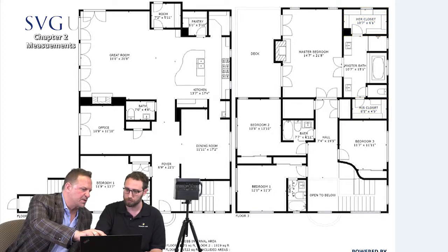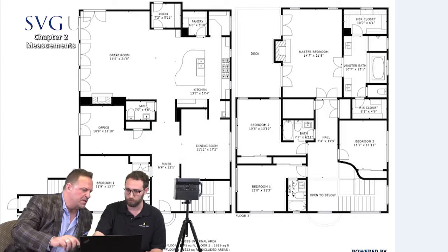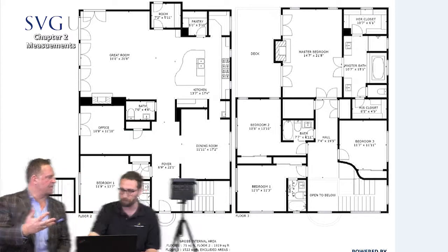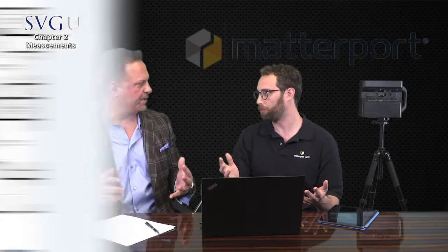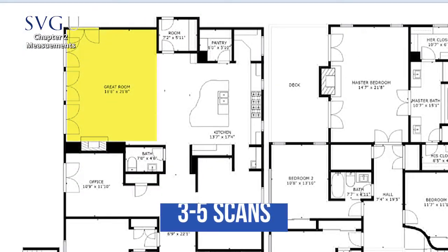Each room — those circles where we set the Matterport camera down — it did a 360 scan and measured each room, creating the visual experience. Some rooms need more than one scan depending on their size. Generally, Matterport recommends 8 to 10 feet as the maximum distance you want between scan positions. So if it's a great room like 18 by 21, you'll probably do three, four, or five scans in that room.